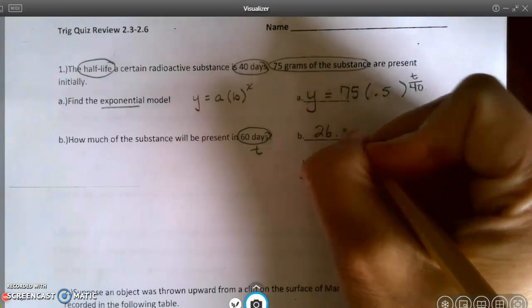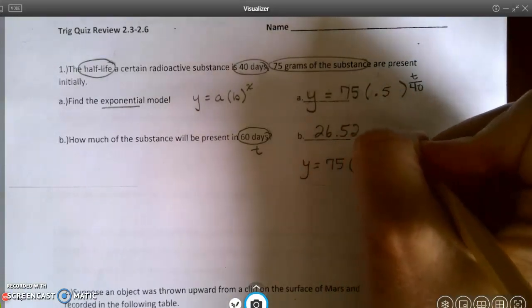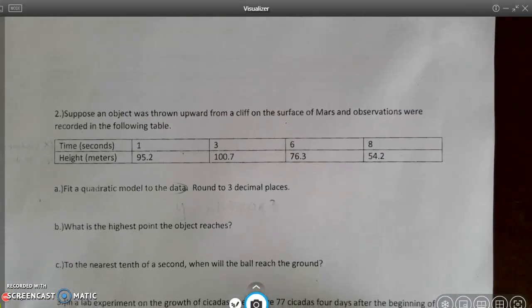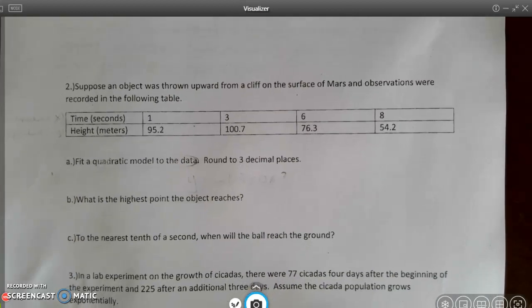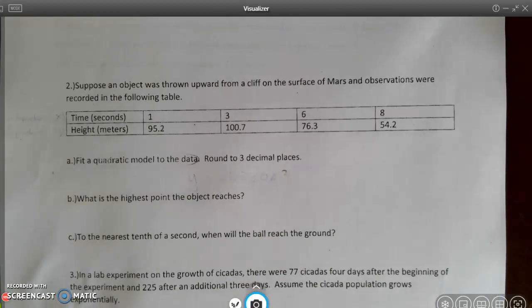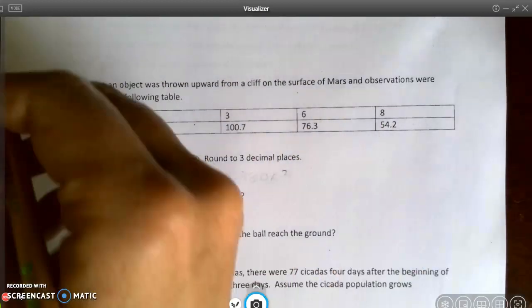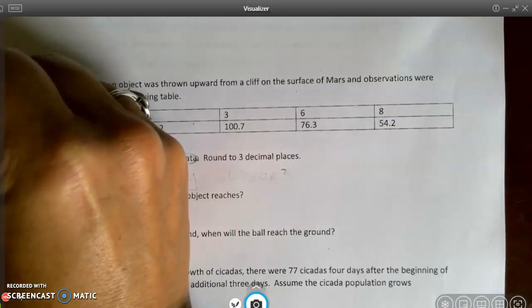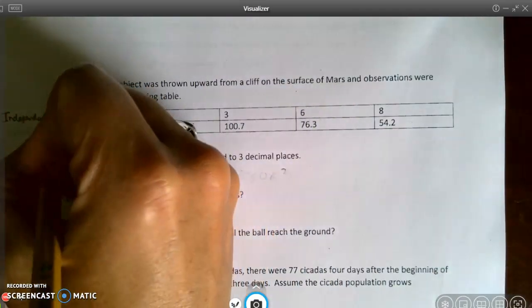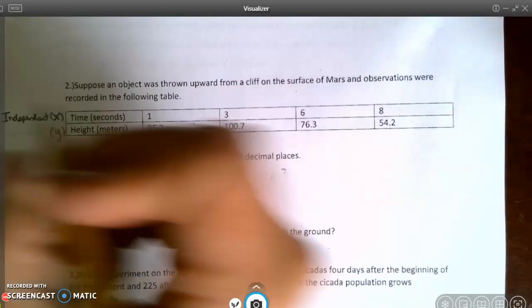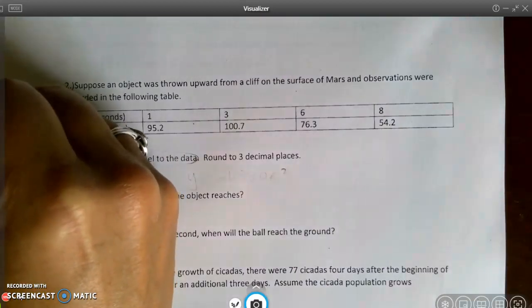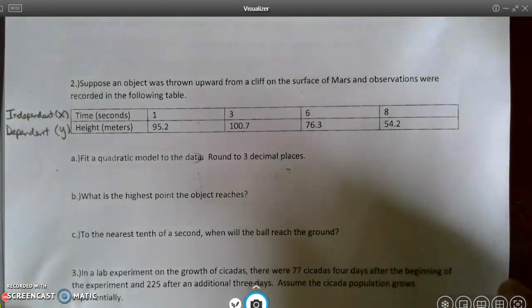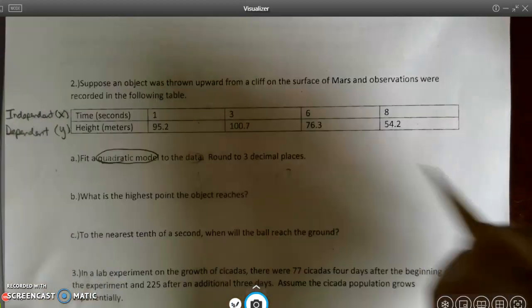All right. So I've got 26.52 grams. I'm going to move down to number two. So suppose an object was thrown upward from a cliff on the surface of Mars and observations were recorded in the following table. So I've got time and I've got height. So time is my X. That's my independent. I like to get in the habit of labeling that. You are going to be having a project coming up. And this is one of the things you always have to do is label the independent and dependent. So that's why I've tried to get into the habit of doing that.